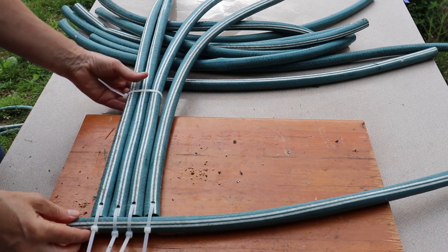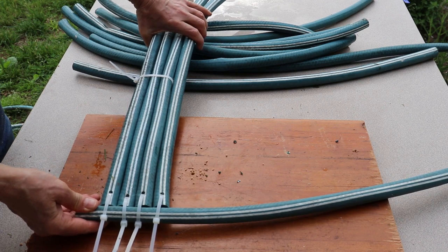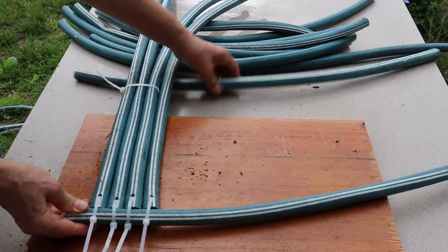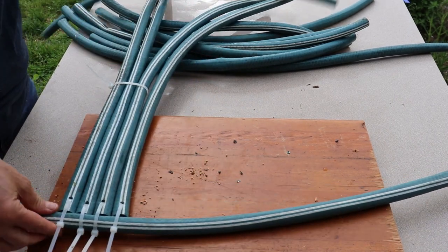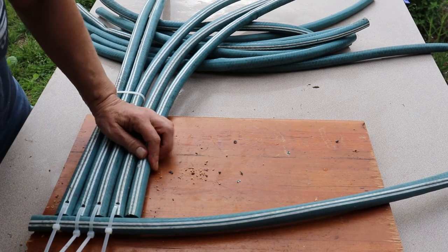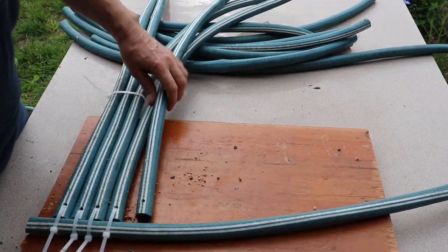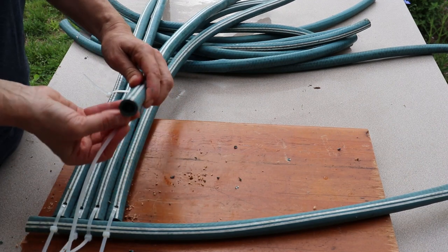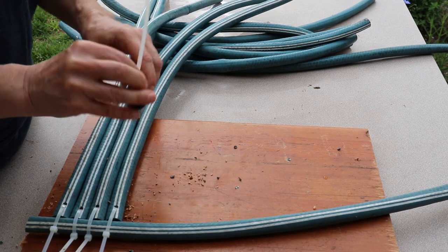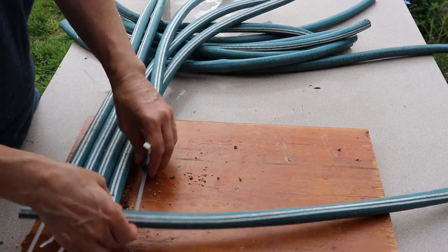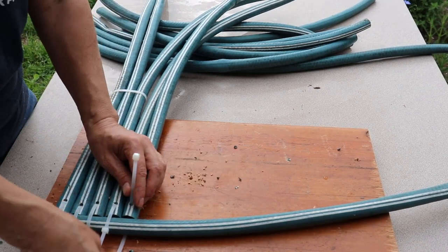Here's another way you might consider making a mat. I've cut my hose into a bunch of pieces of equal length. Then I've drilled a hole in the end of each piece, like so. Then stuck a zip tie through that hole, and zip tied it to another piece down here.